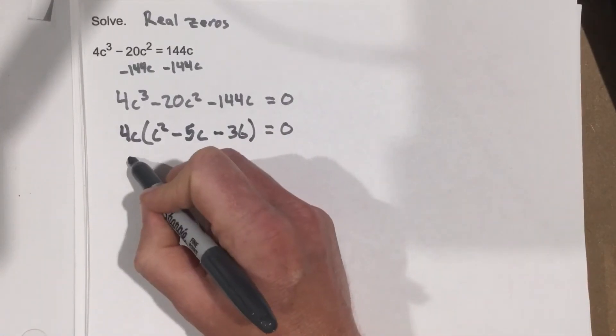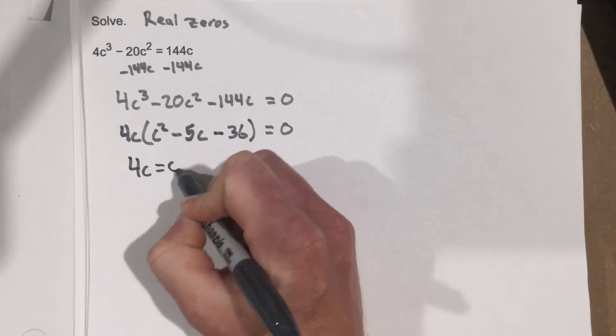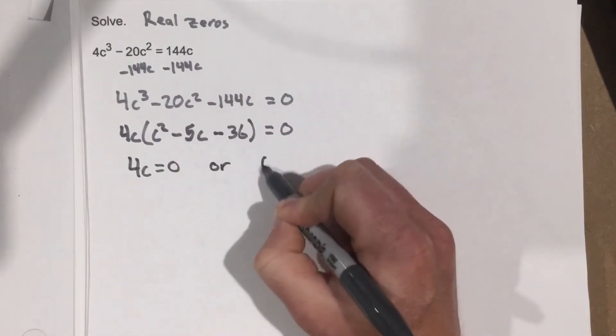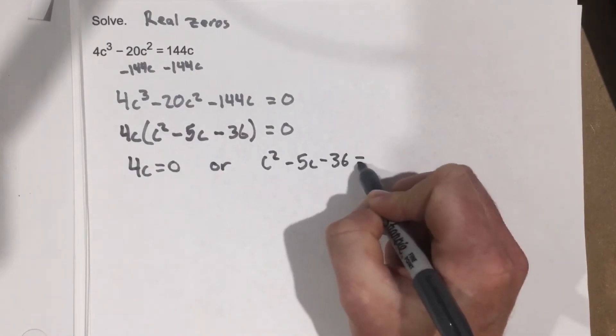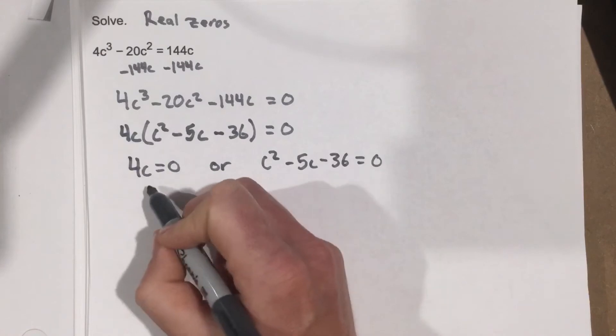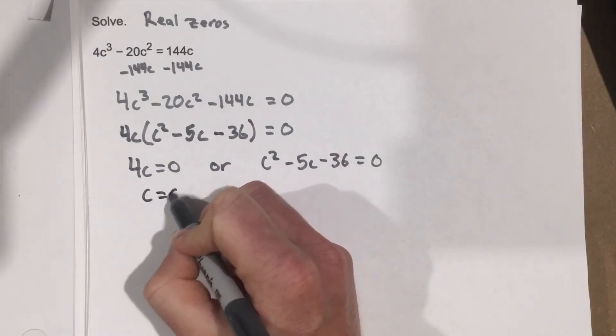I'm going to use the zero product property, so 4c equals 0, or c² minus 5c minus 36 equals 0. Divide by 4, c equals 0.